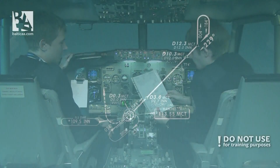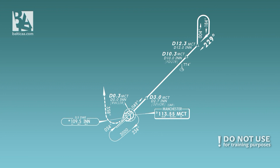We will start our procedure by overflying the Manchester VOR and turn onto a 049 radial outbound. We will fly on this track until we reach a DME distance of 12.3 nautical miles. Then we turn left on heading 004 and fly straight for one minute. After one minute we will make a 180-degree turn to the right onto heading 184 and keep this course until we intercept the VOR inbound track 229.